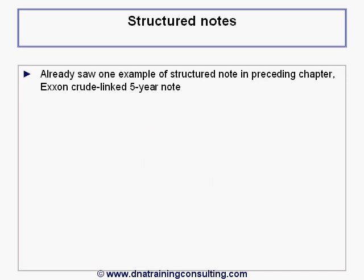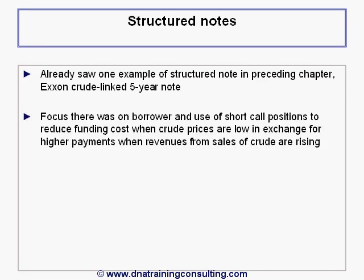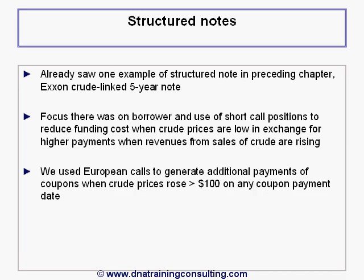We saw one example of a structured note already in the preceding chapter, namely the Exxon crude-linked five-year note. Our focus there was on the borrower and his use of a short call option position to reduce his funding cost when crude prices are low, in exchange for higher payments when revenues from sales of crude are rising. We used European calls to generate the additional coupon payments when crude prices rose above 100 on any coupon payment date.